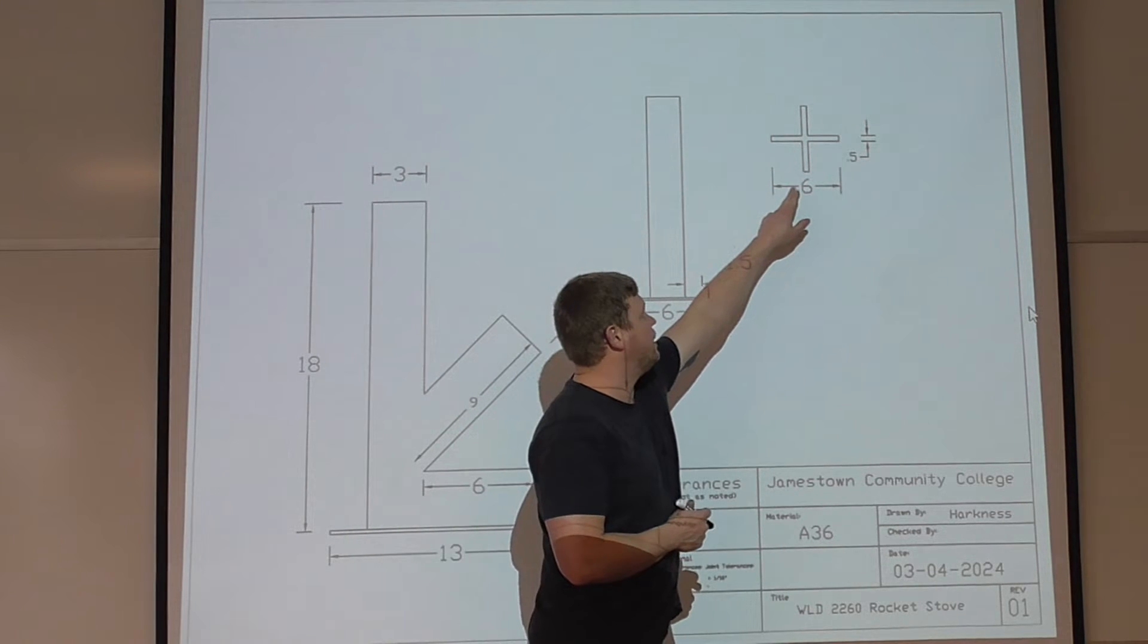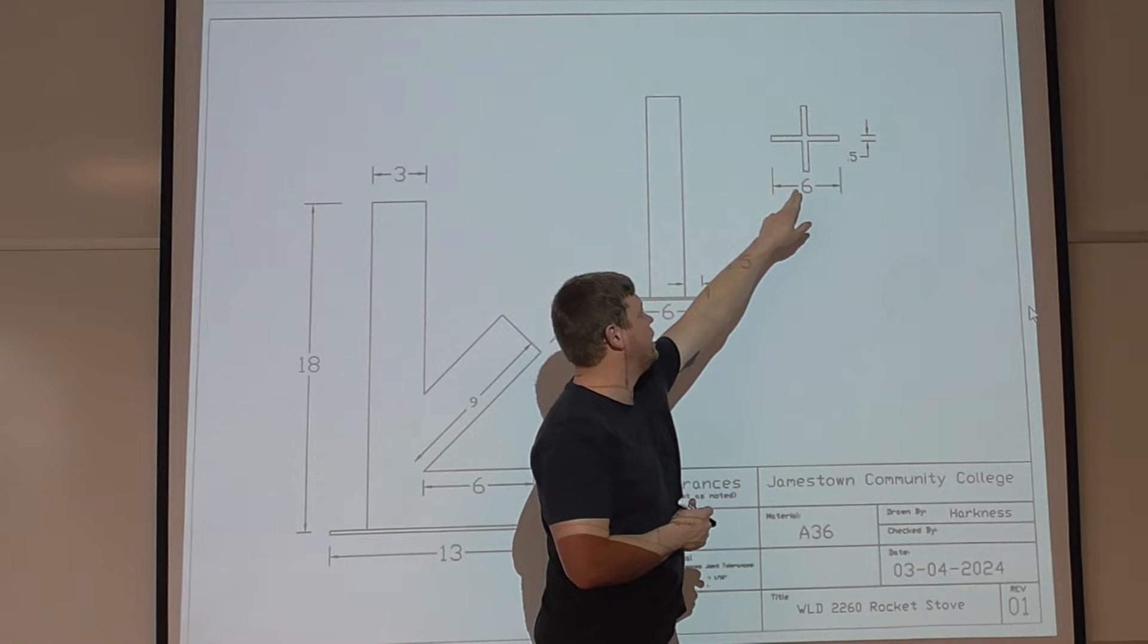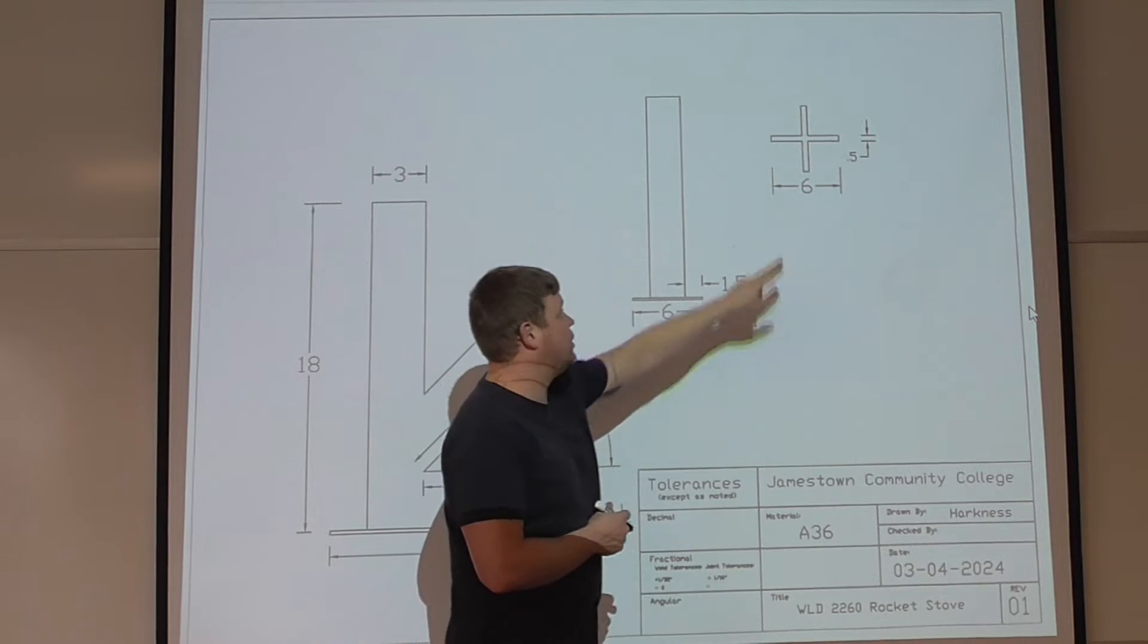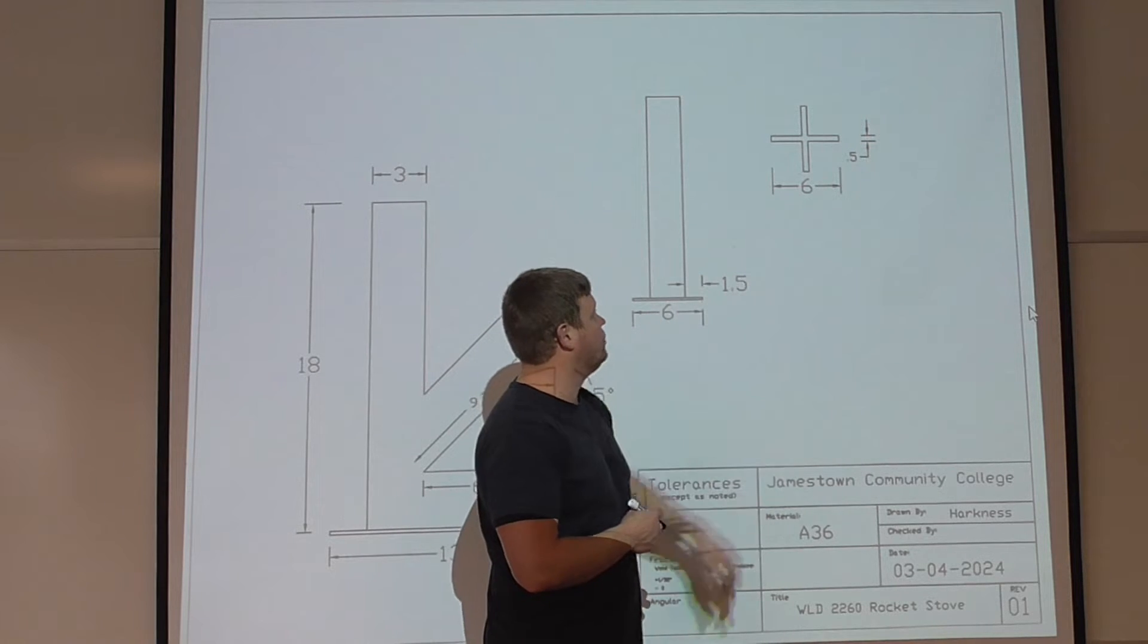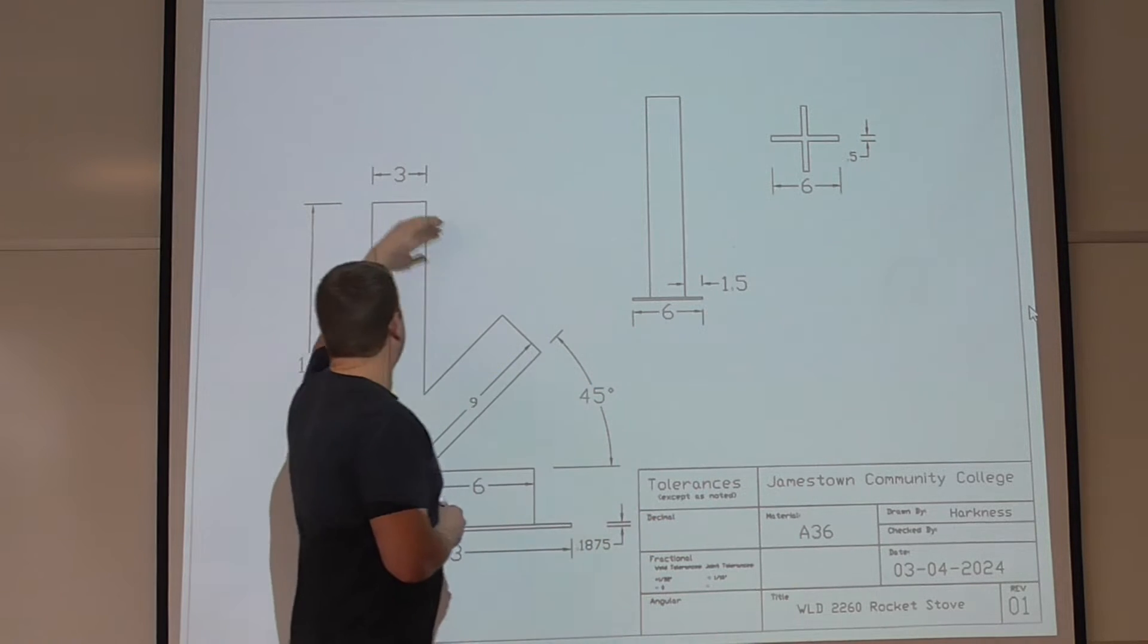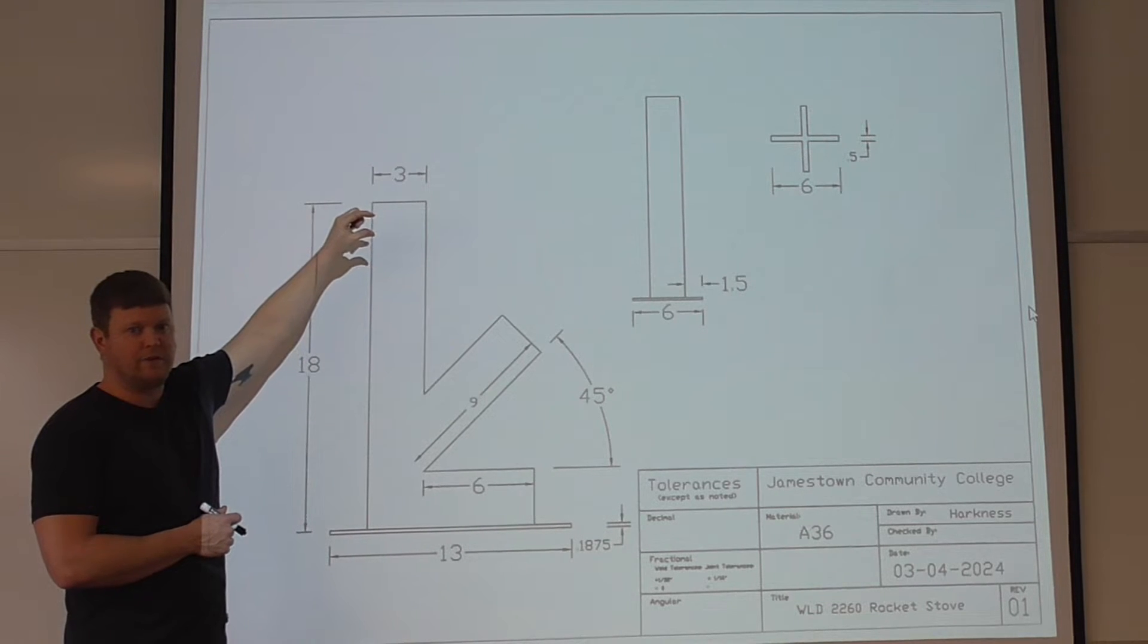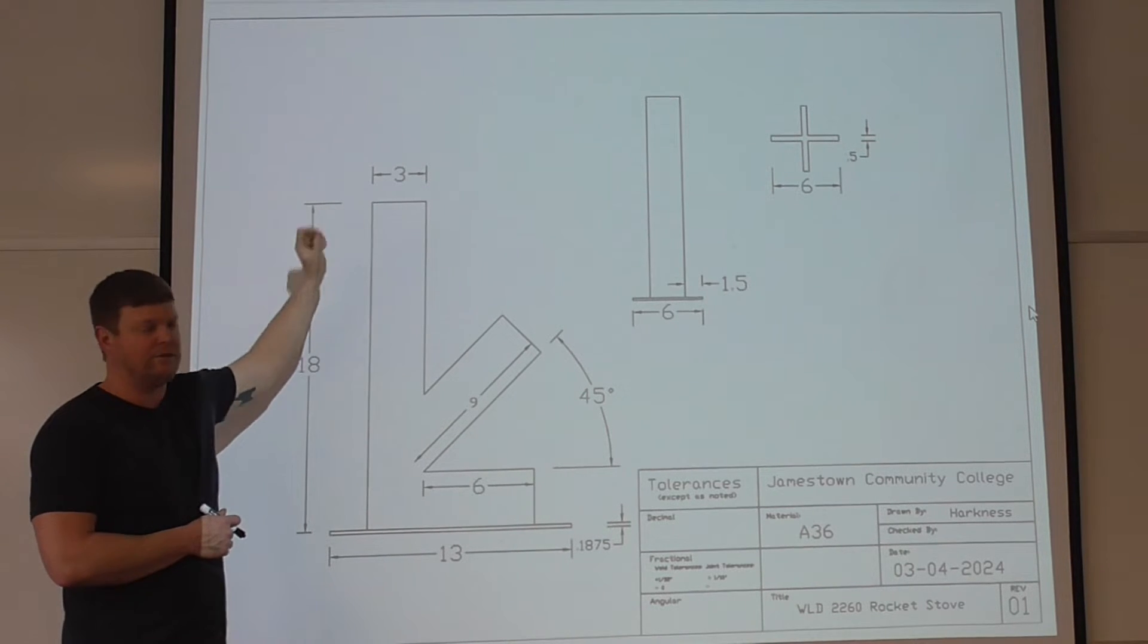Oh yeah, I almost forgot, this is the thing that goes on the top, that's your half inch thick plate. And you can see it's basically 6 inches wide, half an inch thick on the arms that go out. That's going to go right up here on top here and it'll give you a half inch gap on the top so that the fire can breathe and smoke can get out and things like that.